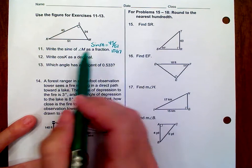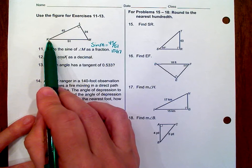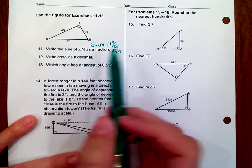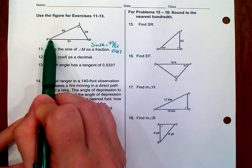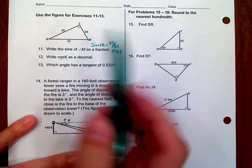Now, number 12 is asking you for the cosine of K, which is the other acute angle. And we want to write that ratio, but this time we want to put it in decimal form. So, cosine is adjacent over hypotenuse, which is still that 45 over 51.